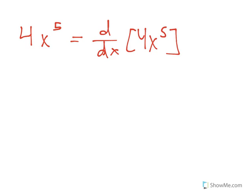We know that the derivative of 4x^5, using our rules, is equal to 4 times the derivative of x^5.